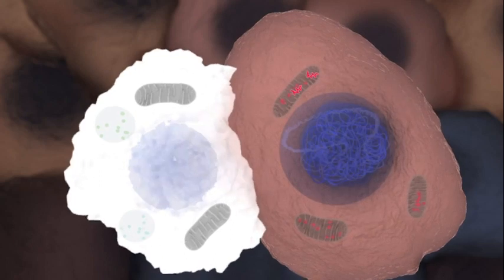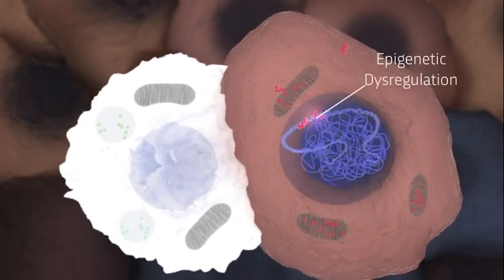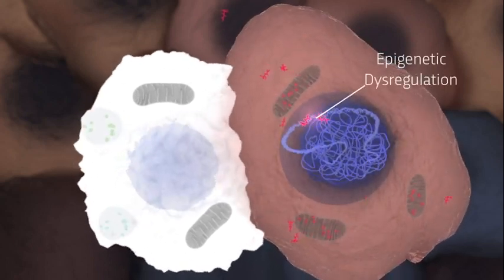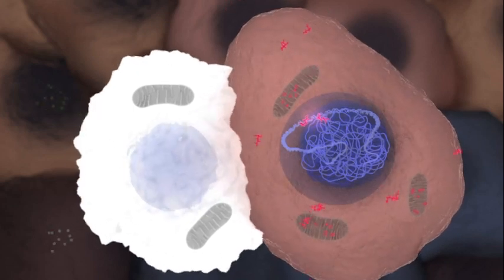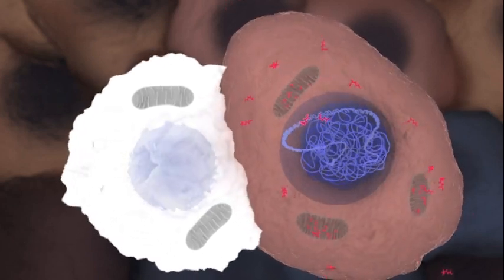Previous studies have shown that D2HG causes epigenetic dysregulation inside cancer cells, which alters their genome and helps them to replicate and grow.